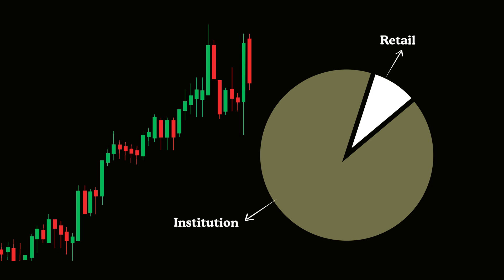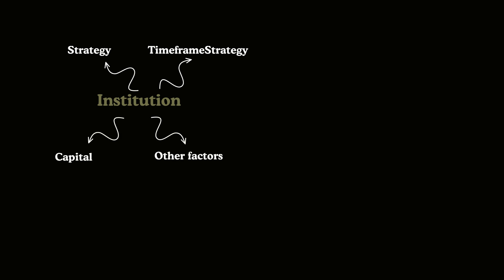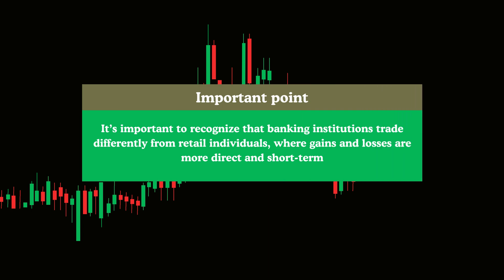In the foreign exchange market, most of the trading volume generally stems from institutional players. Hence, institutions often target one another. Each operates with unique strategies, capital sizes, time horizons, and other variables that differentiate their behavior. Contrary to popular belief, banks participate in trading not mainly for profit or loss, but largely to fulfill currency exchange requirements. It's important to recognize that banking institutions trade differently from retail individuals, where gains and losses are more direct and short-term.